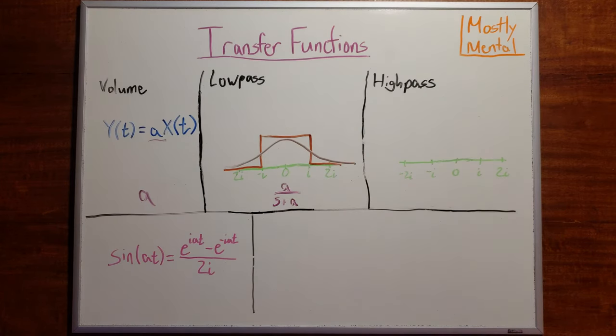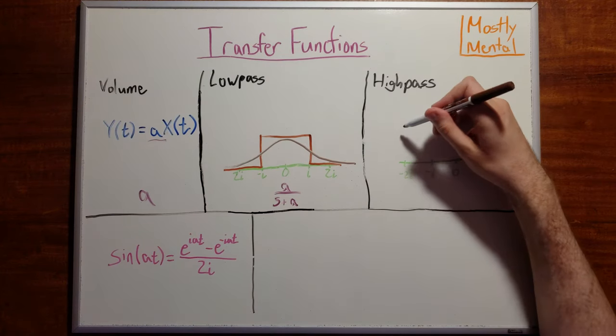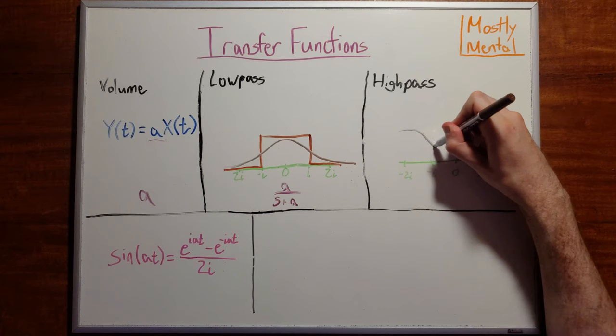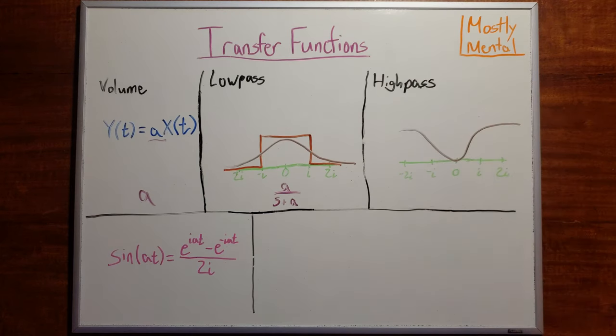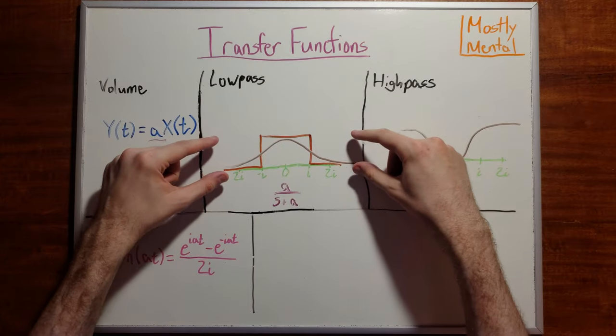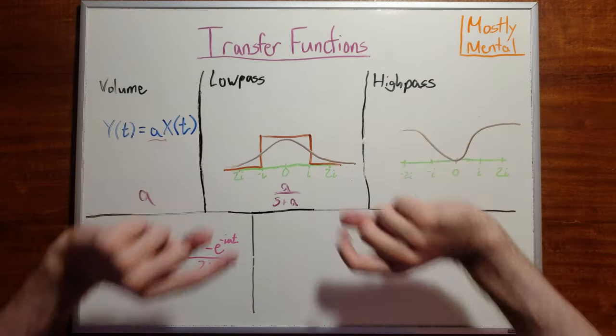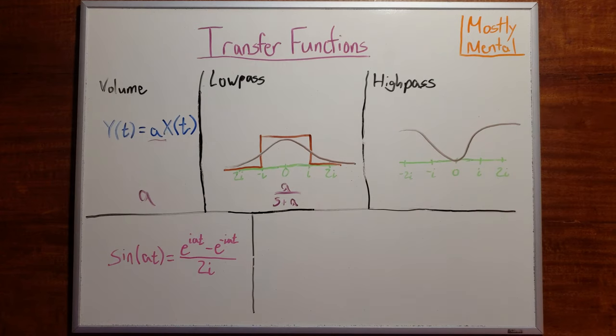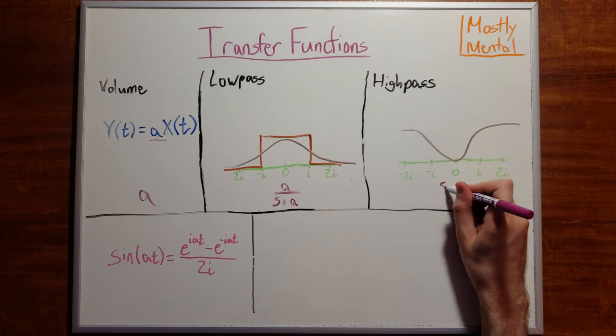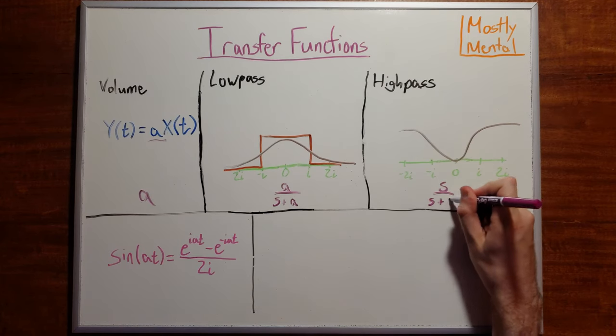In a very similar way, the high pass filter, which removes the low frequencies, should look something like this. And that's just our low pass filter flipped over and shifted back up a unit. So the transfer function is 1 minus this thing, which gives us s over s plus a.